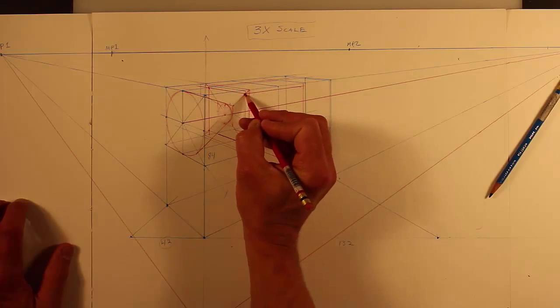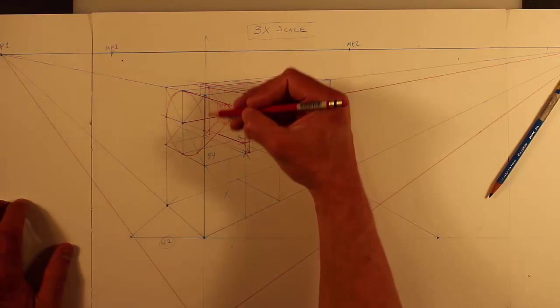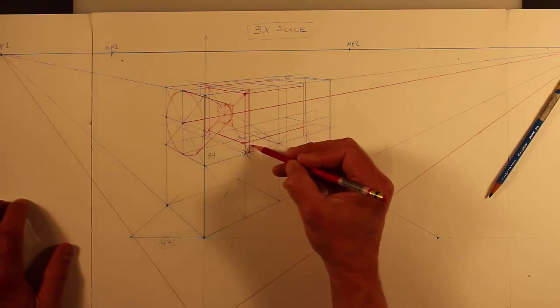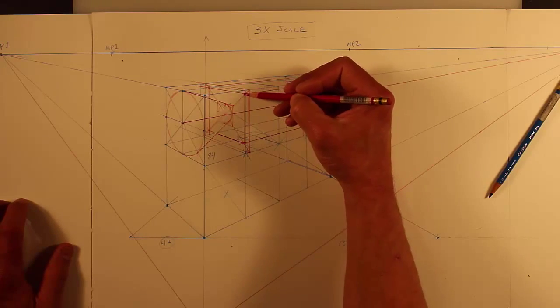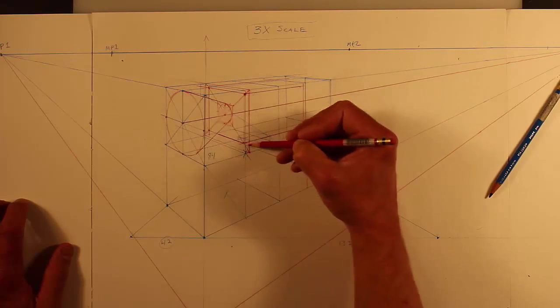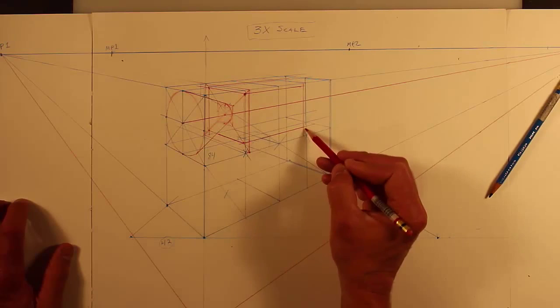I pick a point, and then I just run this to the vanishing point, do a vertical, run to the vanishing point, do a vertical, and there you have that centered on that axis. And I've got that.